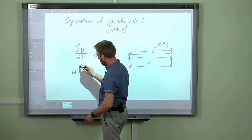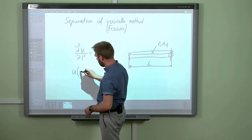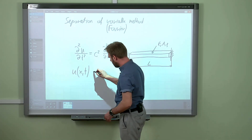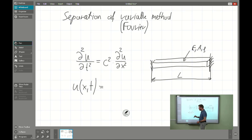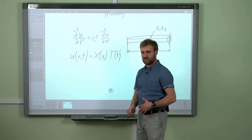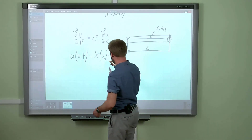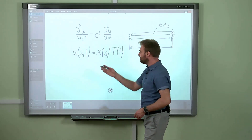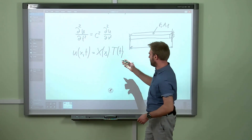We will be predicting that u(x,t) will be expressed as a product of two functions. One will be responsible for the spatial coordinates, and the second will be connected with the time evolution of our solution — the time evolution of the process under consideration.